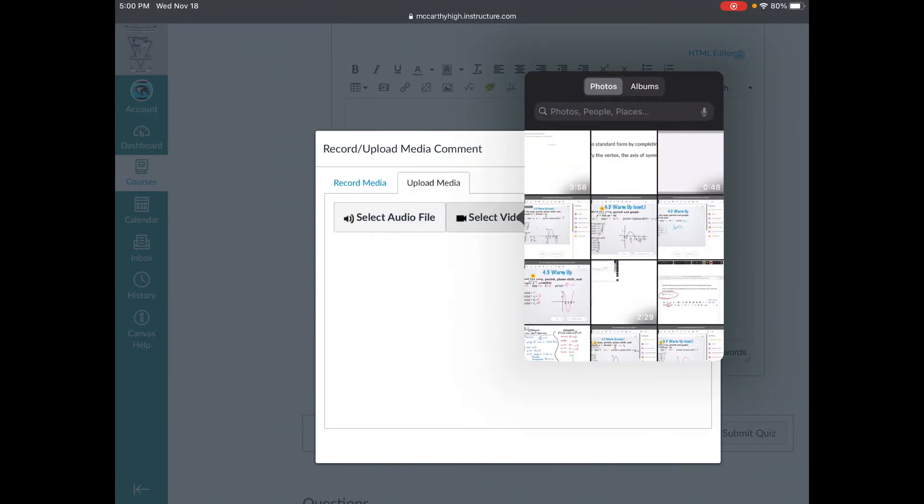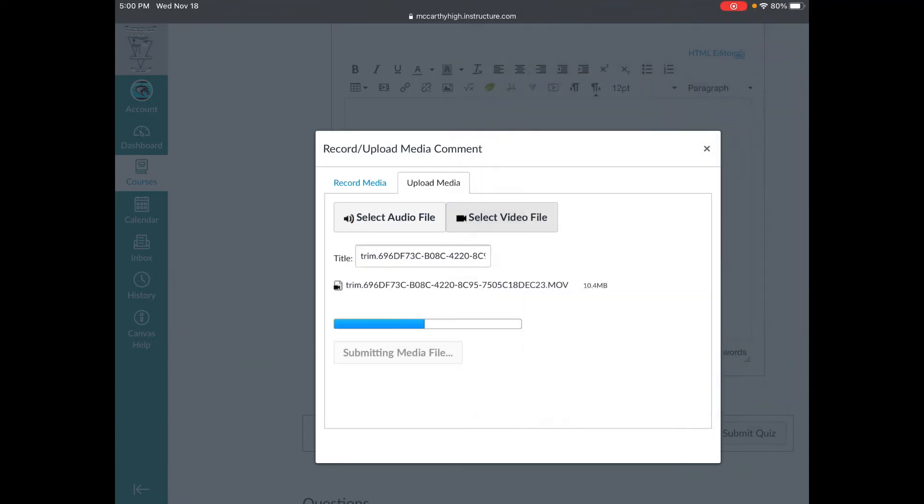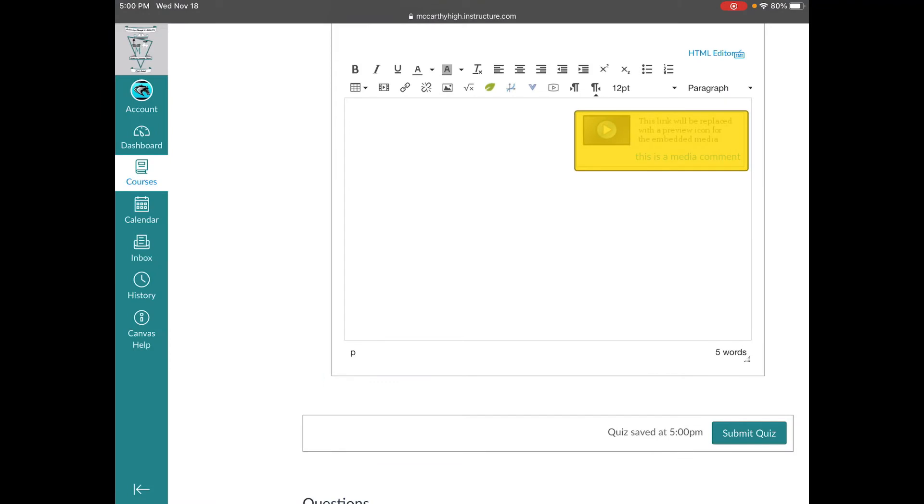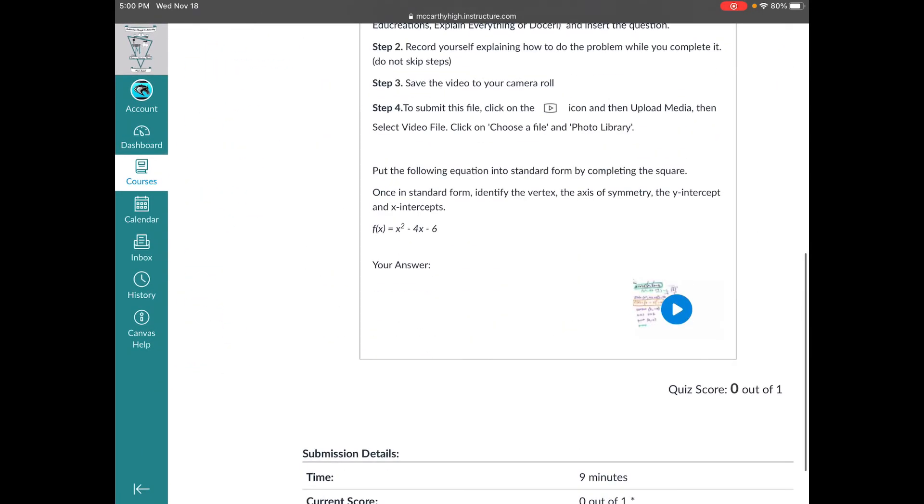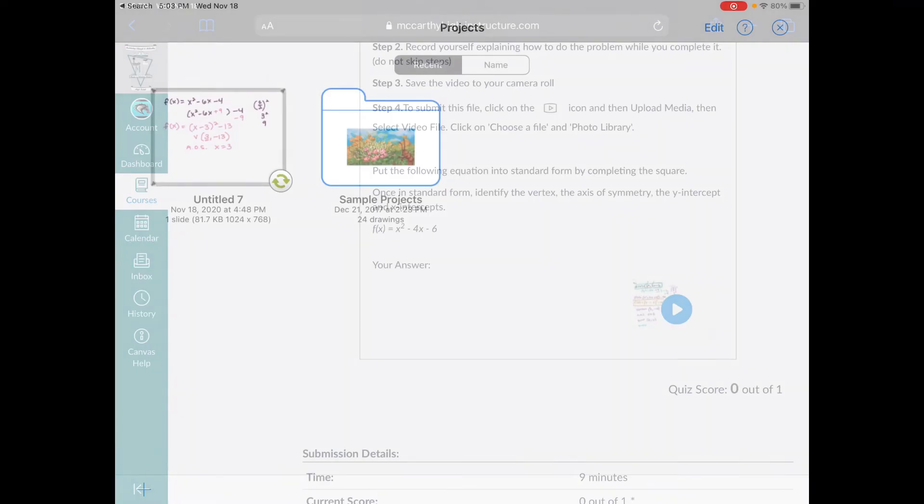I'm going to click on Photo Library. And it's going to be that last video I just uploaded. I'm going to click Use. It's going to compress the video. It's telling me I'm submitting the media file. And then it's loaded. I still have to click Submit Quiz. So I click Submit Quiz. And now my quiz is submitted. You can see that submission right there in the corner.